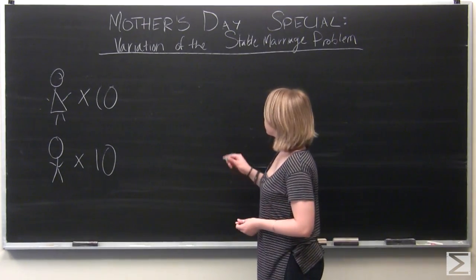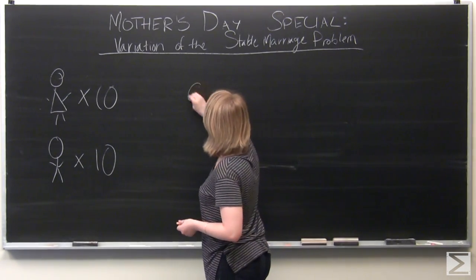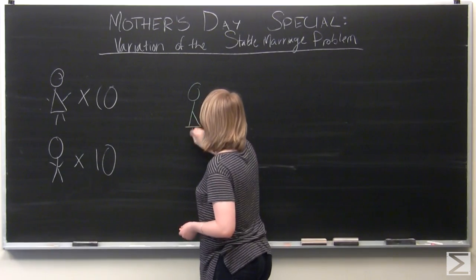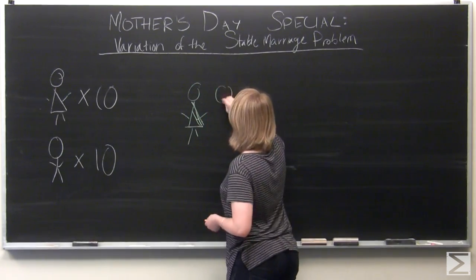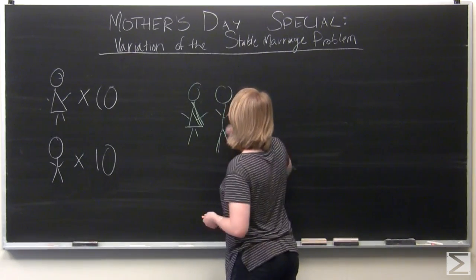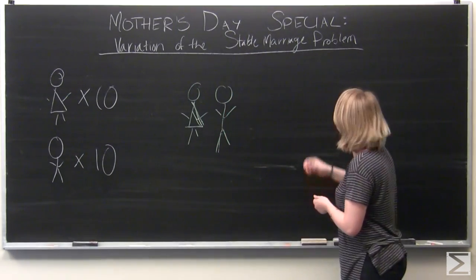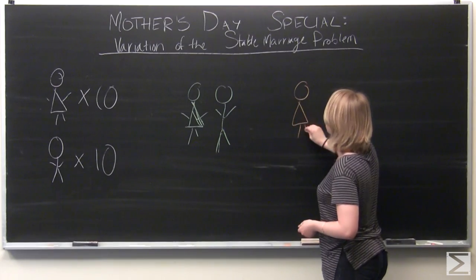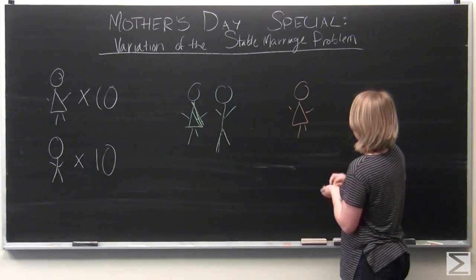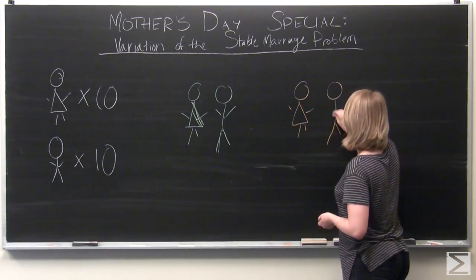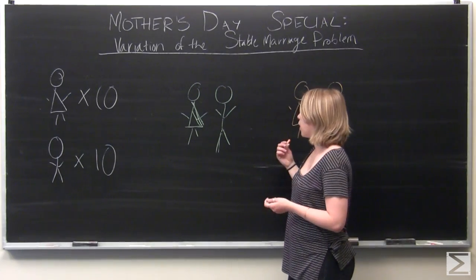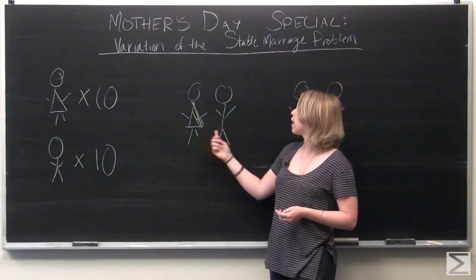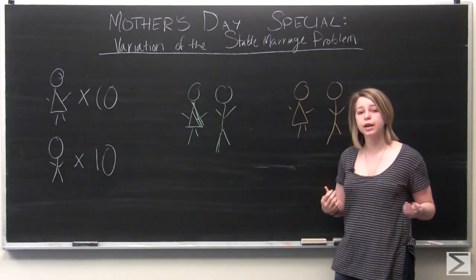So, for example, a stable marriage happens if we have a green wife and a green husband, and an orange wife and an orange husband. Now these two marriages are stable as long as the wife and husband prefer each other to anyone else.